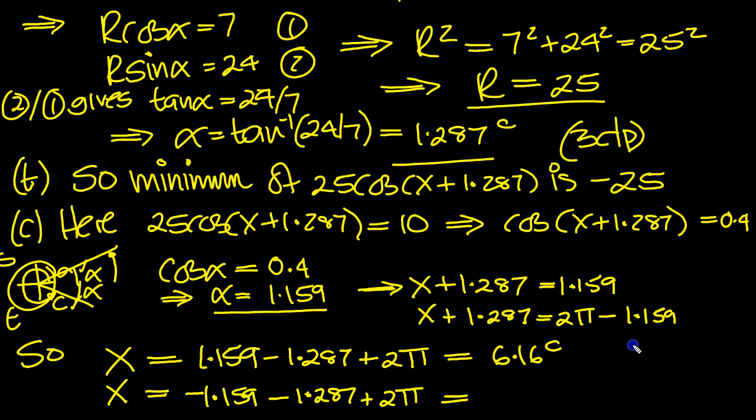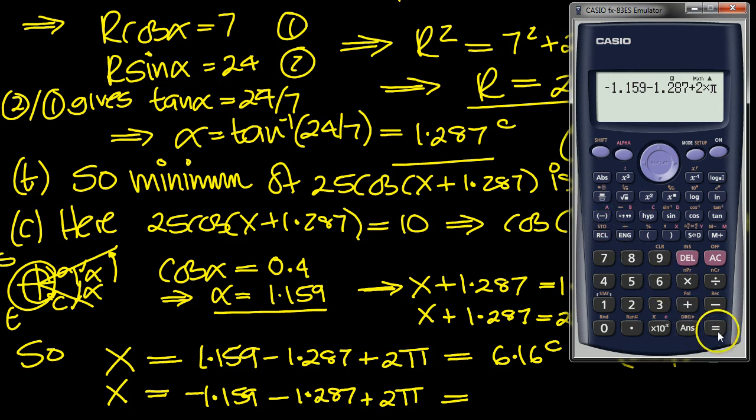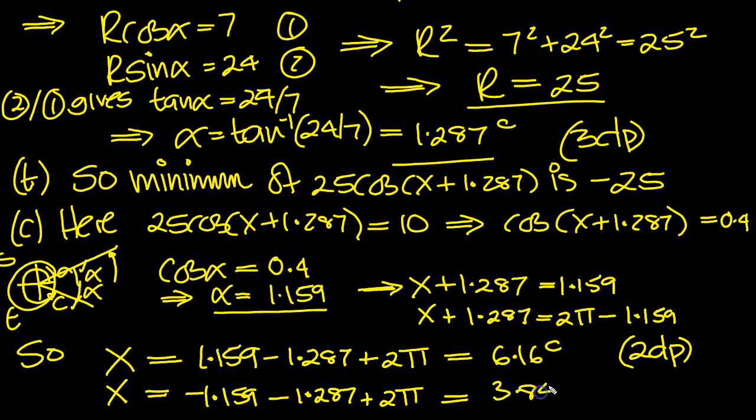That's within the range because 2π is 6.2 something. And this one now, let's get the other value. So instead of plus 1.159, the only difference is that this is a minus. So why don't we just toggle back, put a minus in there. And we get 3.84 to 2dp, 3.84 radians to two decimal places. Thank you.